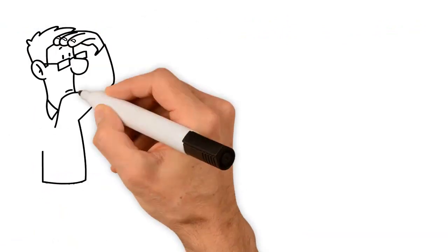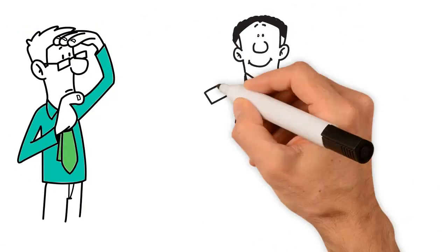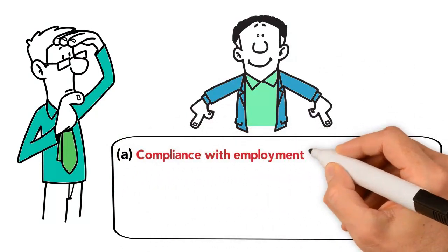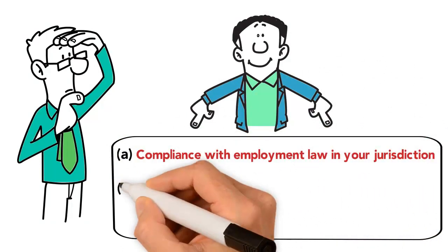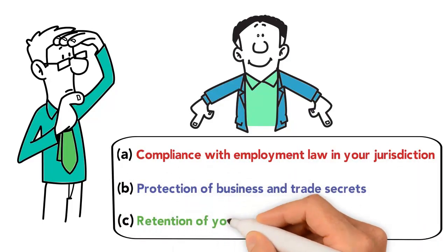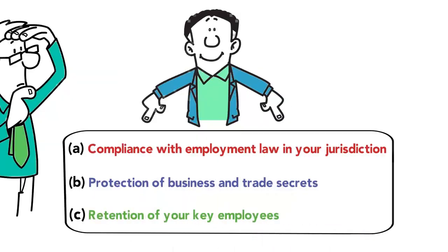What investors typically look out for. Investors typically look out for the following: A. Compliance with employment law in your jurisdiction, B. Protection of business and trade secrets, C. Retention of your key employees.